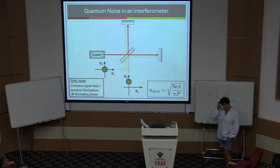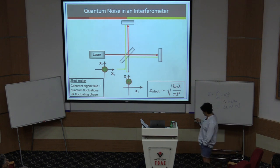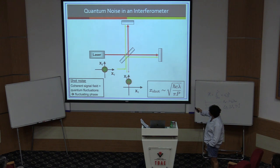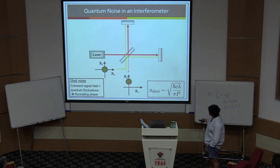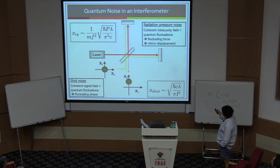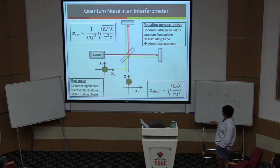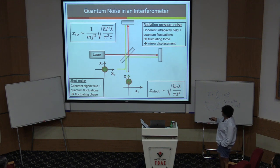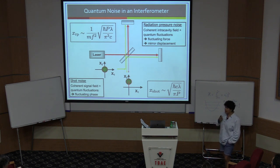What about radiation pressure? It's actually the same thing. These same vacuum fields — the yellow vectors — are going up to each mirror and superposing with the very intense intracavity light field, the red vector. For the same reason, radiation pressure noise also comes from the coherent superposition of the intracavity field with the vacuum state. And it's that fluctuating amplitude fluctuation that kicks the mirror and gives you the noise.